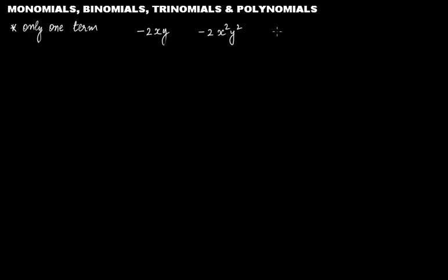So can we say that any number, let's say number 7, is a monomial? Most of you will say that number 7 is a natural number or a whole number, and since it doesn't contain any variable — because in an algebraic expression we have variables — here we don't have any variable, therefore 7 is not an algebraic expression and therefore it cannot be a monomial.